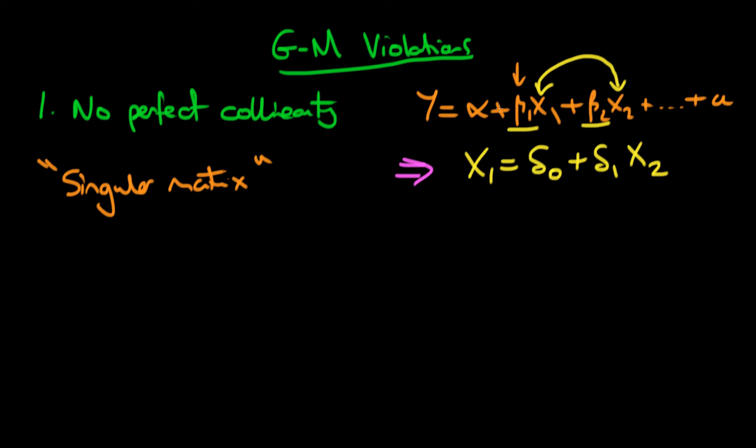Don't worry if you don't understand what that means. I'm just providing some context for why it says singular matrix. So how do we handle this example of when we have the violation of no perfect collinearity and we have some perfectly collinear regressors?